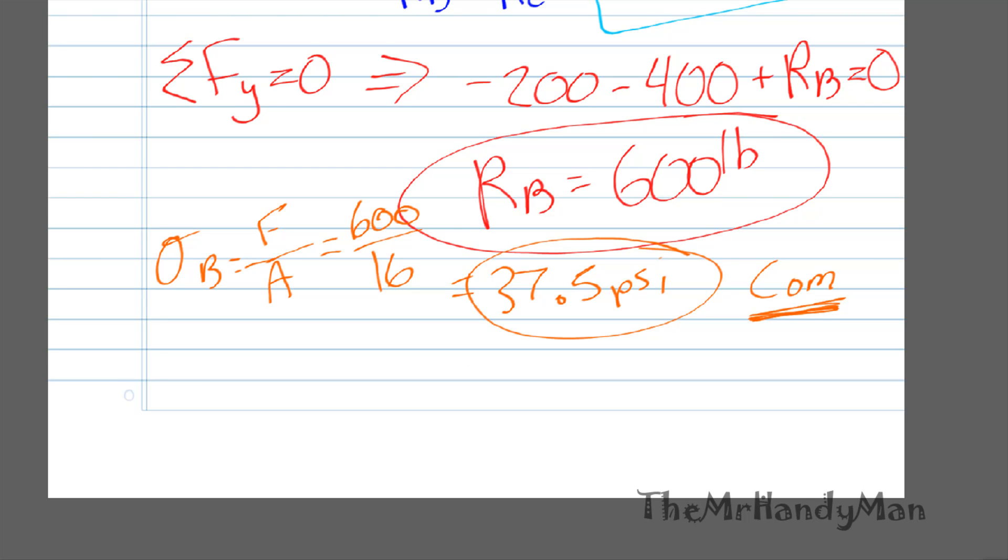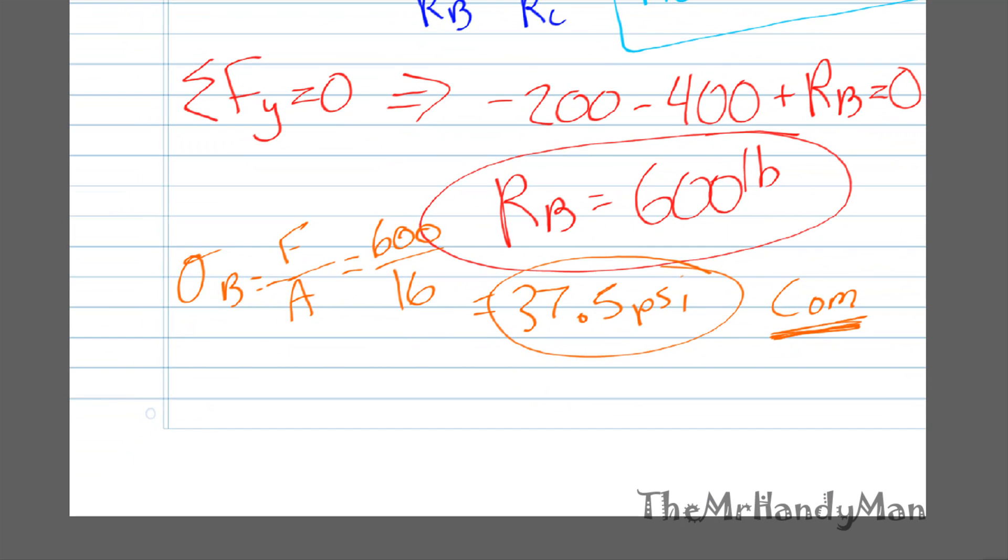Diving real quick into the final one, you have A, which is going to be force over area, which is going to be 400 over 36, which calculating that out is going to be 11.11 PSI.